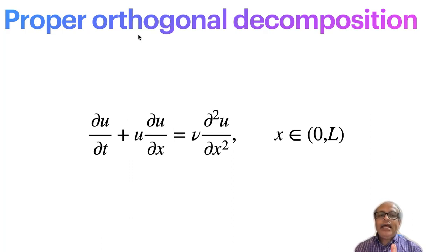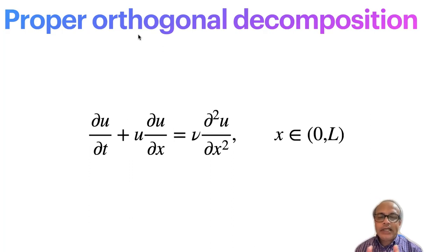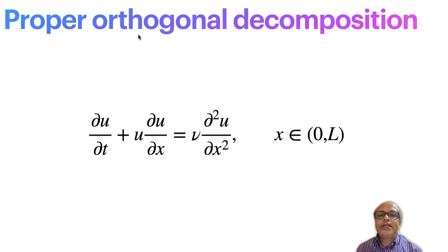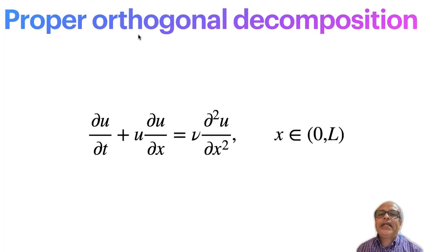By Proper Orthogonal Decomposition I mean that if I have a vector, then I can write that vector as a linear combination of other vectors. Those vectors are orthogonal, and I'll call this decomposition a sum of other vectors. So mathematically, we can write any vector as a linear combination of a set of orthogonal vectors.